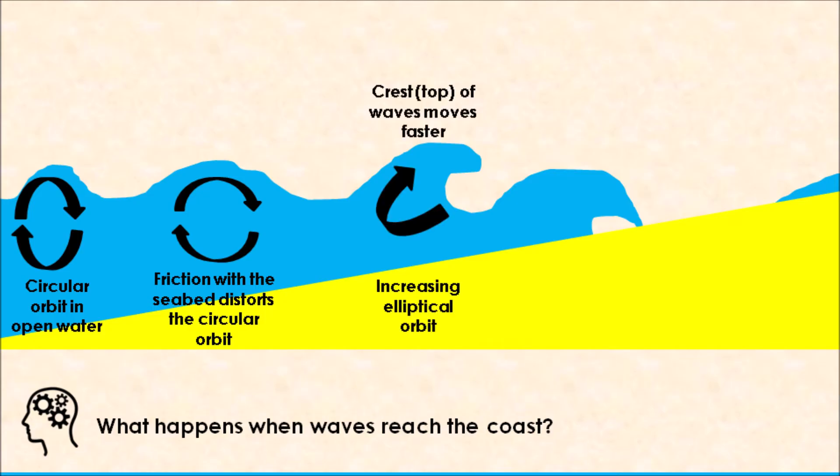The crest, or the top of the wave, then moves at a faster speed compared to the trough, the base of the wave, and that increases the elliptical orbit. When the wave eventually approaches the shoreline, it will break and wash onto the shore. The water that rushes up the beach is known as swash, and the water that retreats back towards the sea is known as backwash.